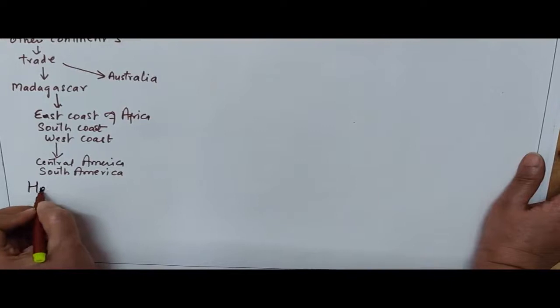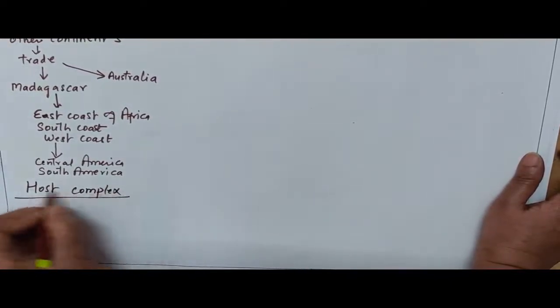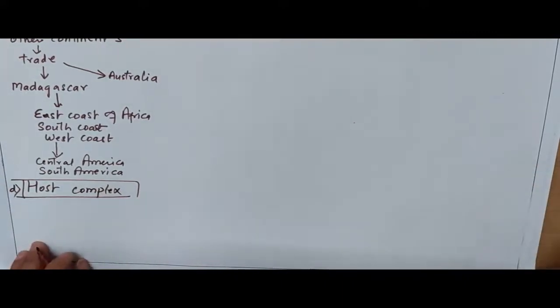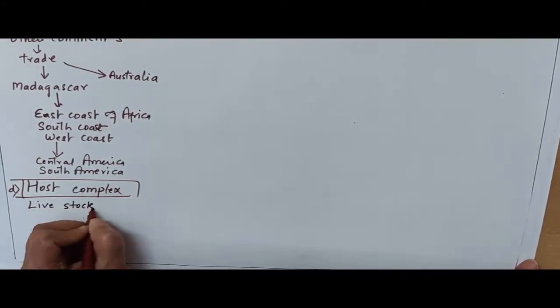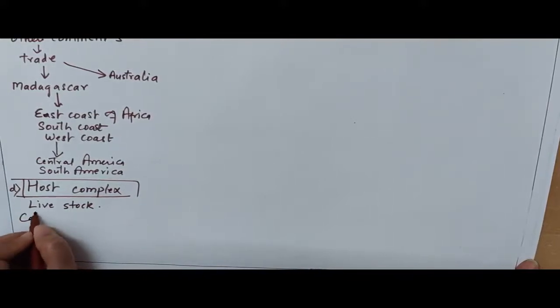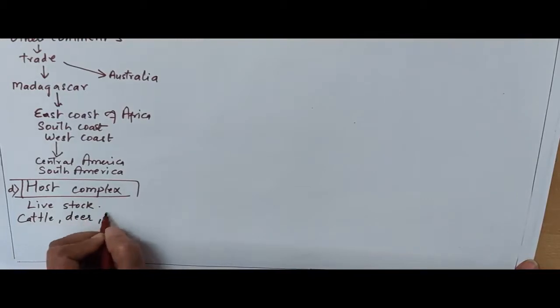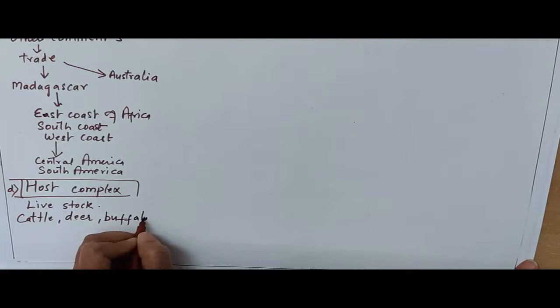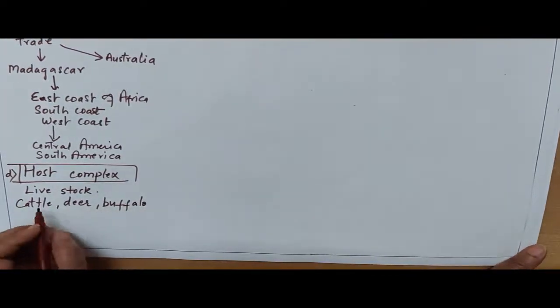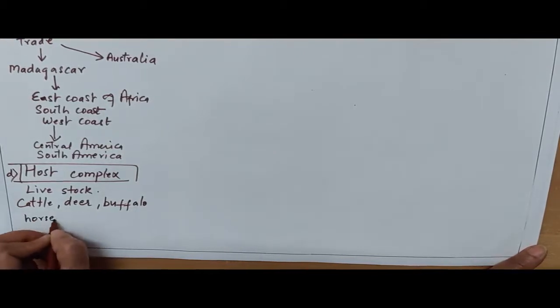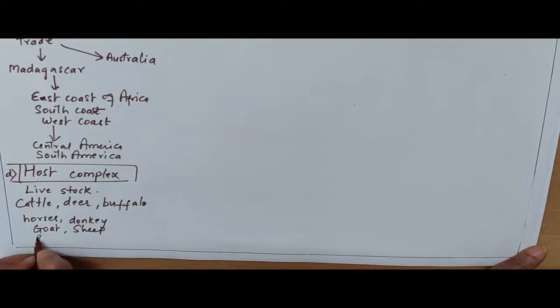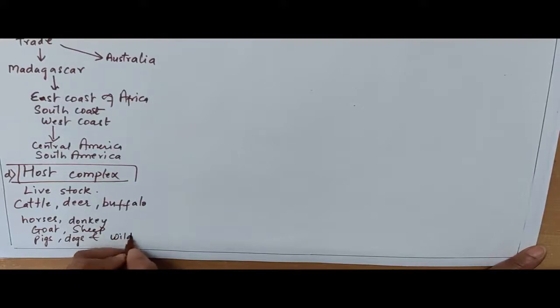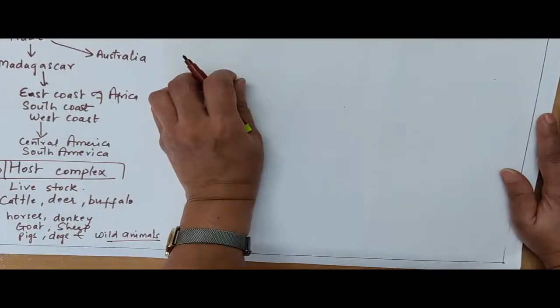Next point is host complex. Basically they are the ectoparasites of livestock. Found mostly in cattle, deer, buffalo. They are also distributed in horses, donkey, goat, sheep, pigs, dogs and some wild animals.